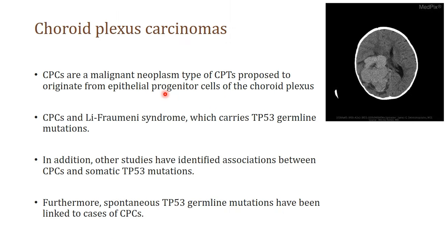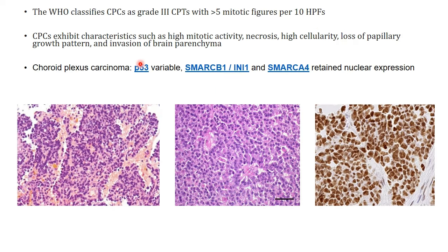Choroid plexus carcinomas are typically malignant tumours graded as WHO grade 3. They have been associated with Li-Fraumeni syndrome, which is typically associated with germline TP53 mutations. There may also be associated somatic TP53 mutations and spontaneous TP53 germline mutations. WHO classifies them as grade 3 with more than 5 mitotic figures per 10 high power field, a characteristic sheet-like growth pattern with loss of papillary architecture, high mitotic activity, increased haemorrhage and necrosis. These tumours are typically positive for p53 and show characteristic SMARCB1/INI1 and SMARCA4 retained nuclear expression.